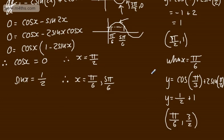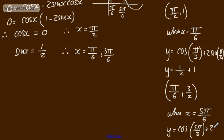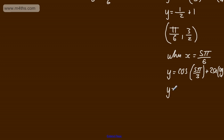For x = 5π/6, y = cos(5π/3) + 2sin(5π/6). cos(5π/3) is in the fourth quadrant and equals 1/2. sin(5π/6) = 1/2, so 2sin(5π/6) = 1. Therefore y = 1/2 + 1 = 3/2, giving the coordinate (5π/6, 3/2). We could have used the symmetry from the previous part to arrive at this same answer.